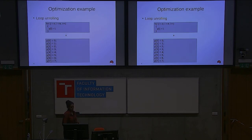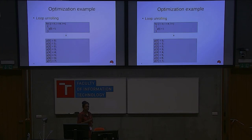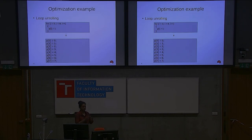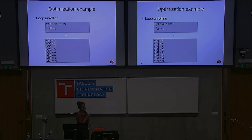Then we have loop unrolling. Inside the loop, we have a y array being assigned values equal to their index. Since for every index we know the assignment, instead of looping over it we can write out each assignment explicitly. The compiler will do this if the optimization is enabled. In every iteration you avoid the incrementation and the loop condition check, which saves overhead.